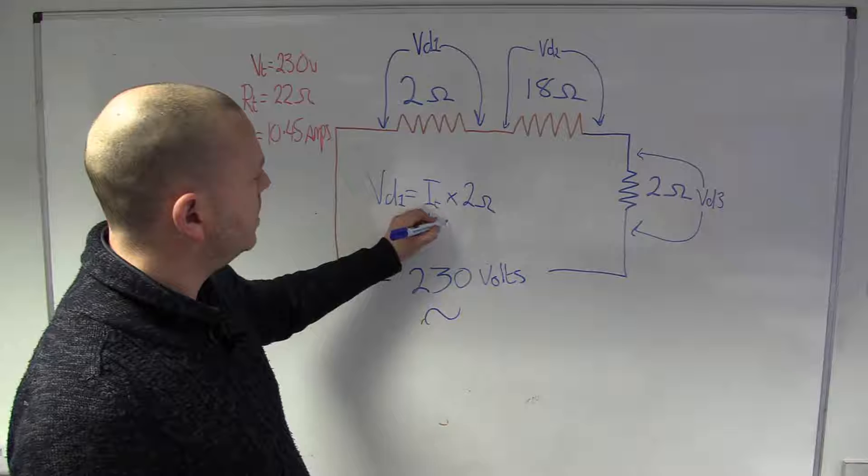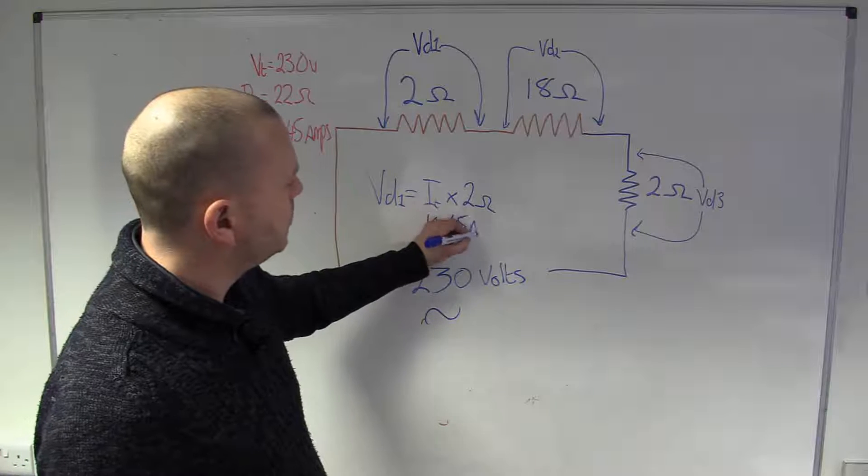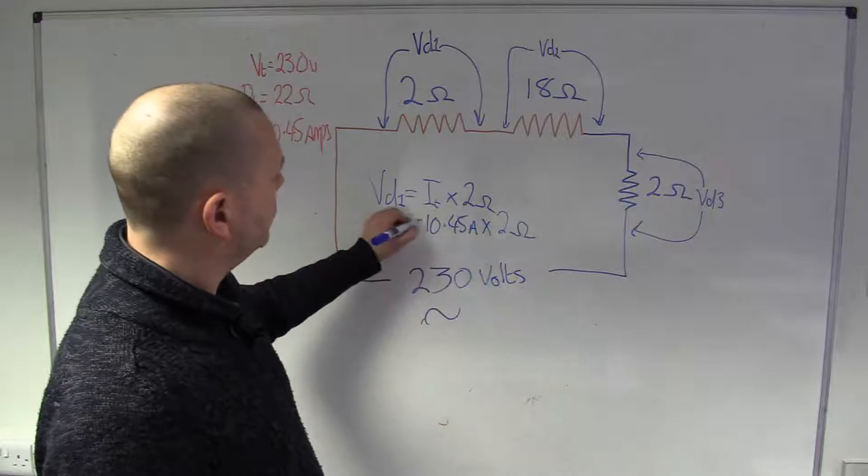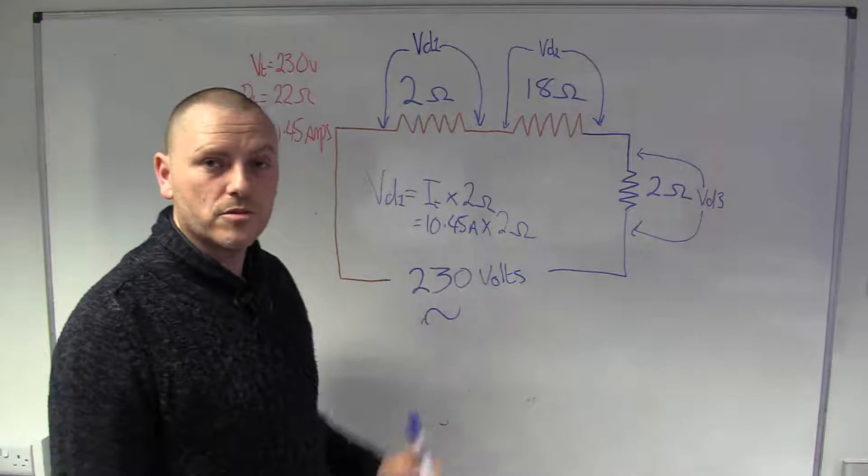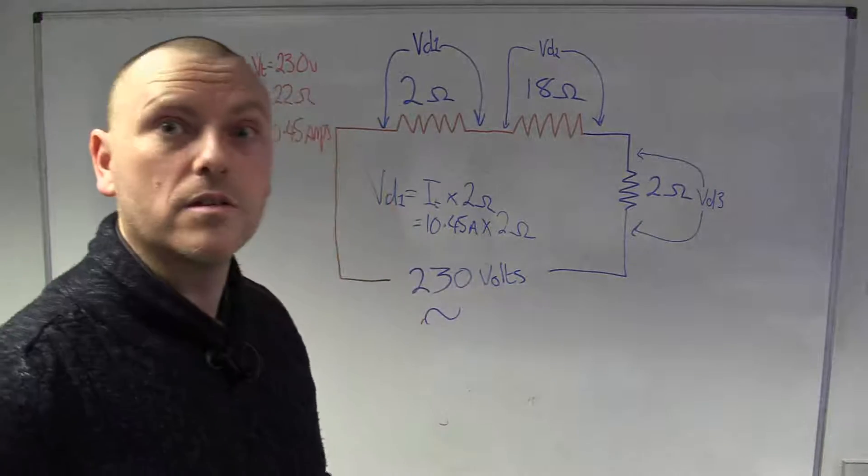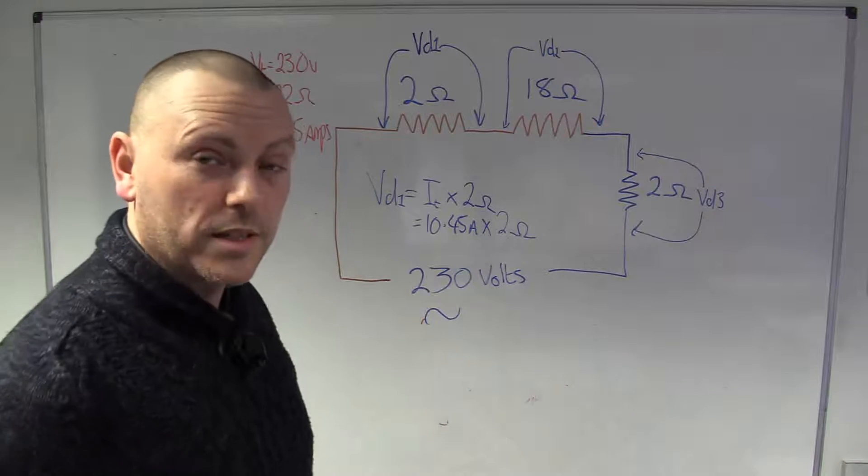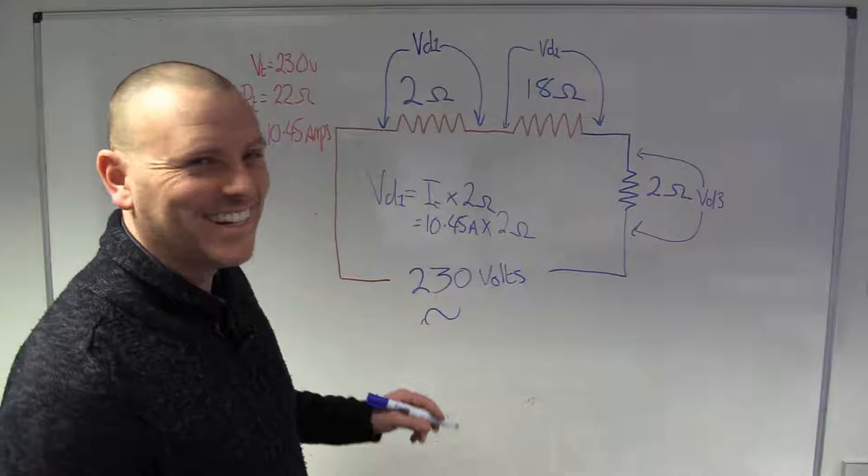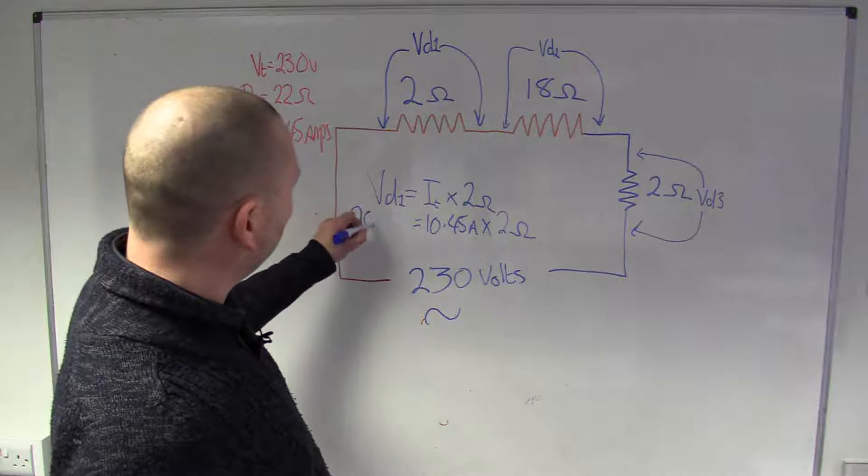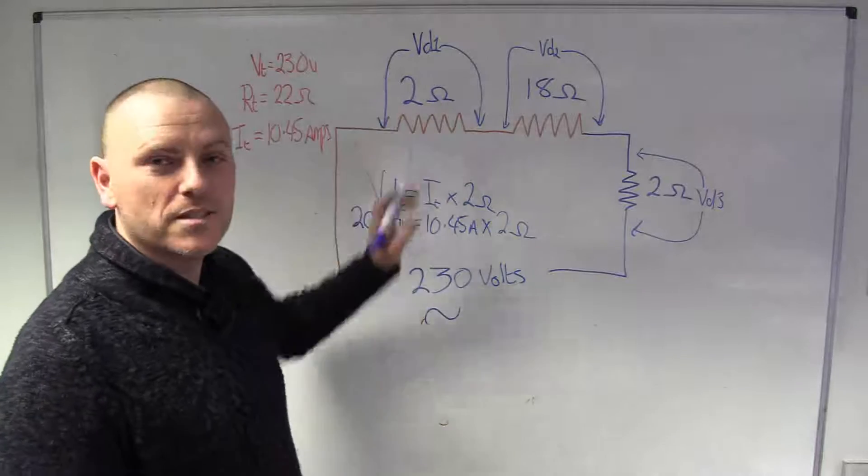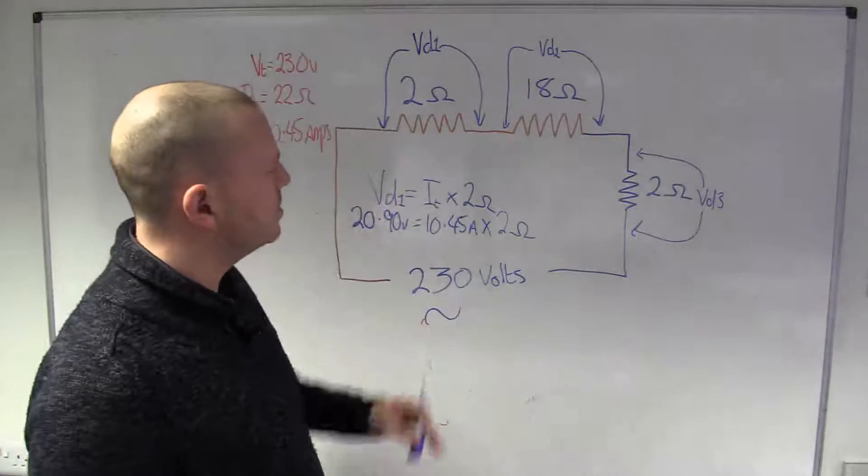So, our equation would be 10.45 Amps times the 2 Ohms will give us the volt drop across that there. And again, I'm going to go to my calculator because I'm that bad. So, 20.90. I could have done that. 20.90 Volts. So, we've lost 20.90 Volts across that resistor.